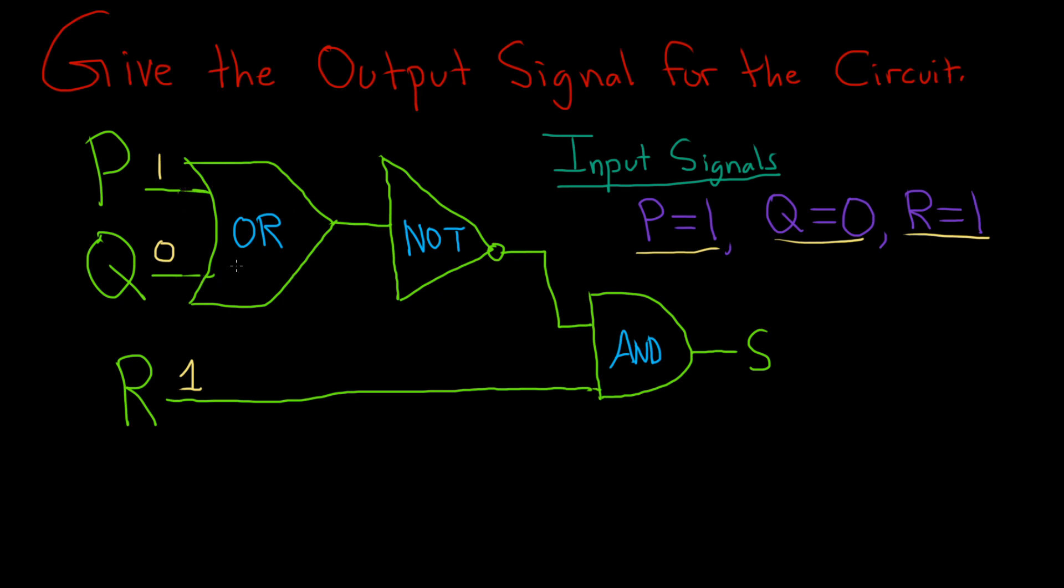So you have 1 and 0 entering the OR gate. Remember, OR is true if at least one of them is true. So 1 is true, 0 is false. So at least one of them is a 1, so the output is also true, so 1. As long as one of them is a 1, it's 1. The only time this will be 0 is if they're both 0s, in other words both false.